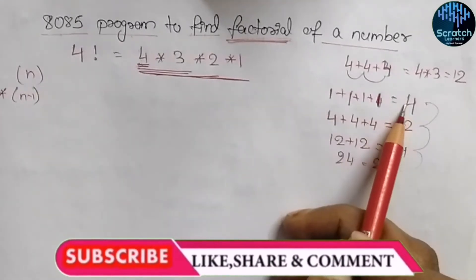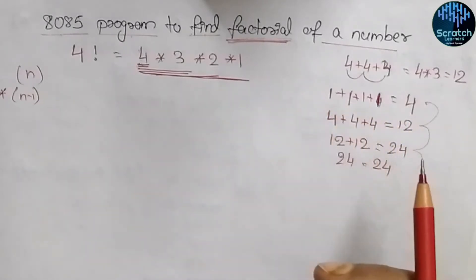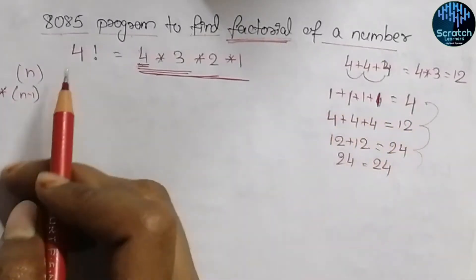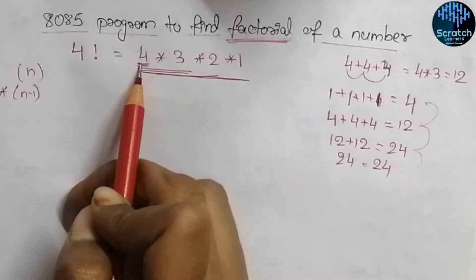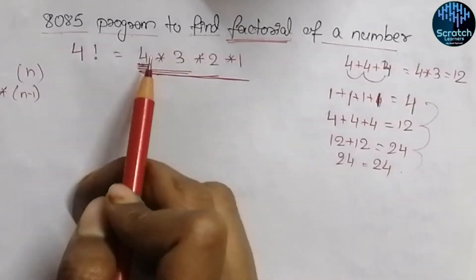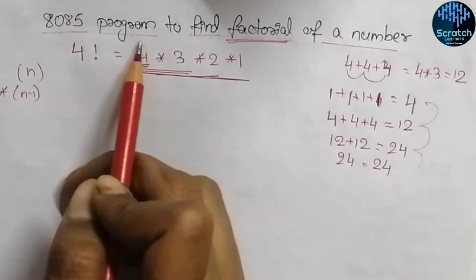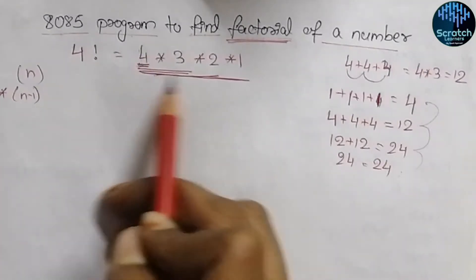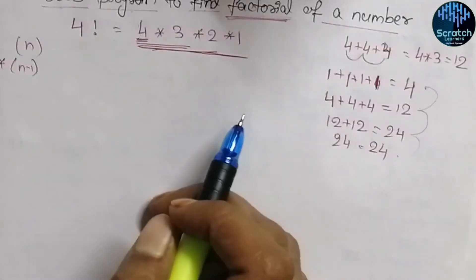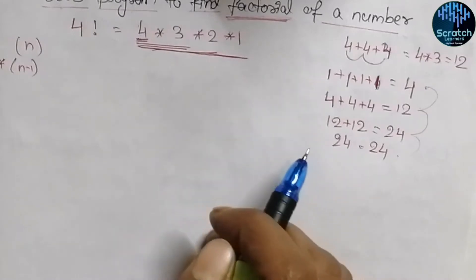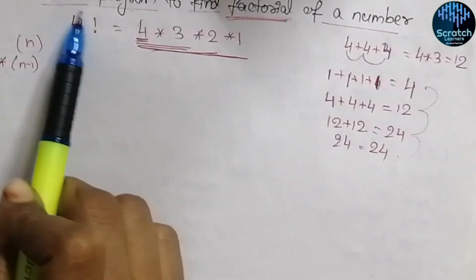In total we call the subroutine four times: the first call adds one to get the value of N, the second call multiplies to get the next partial result, the third call continues, and the fourth call gives the complete result. Now let's write the assembly language program.